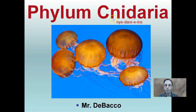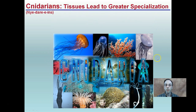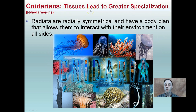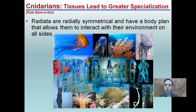Here we're looking at the animal phylum Cnidaria. They have tissues that lead to greater specialization. Remember our sponges — we're now going a little bit more advanced, still pretty primitive and simple, but we do have tissues being formed. These animals are radially symmetrical, unlike our sponges. They have a body plan that allows them to interact with their environment on all sides, enabling high environmental interactions. Radial symmetry is one of our key distinguishing factors for placing the complexity of animals.